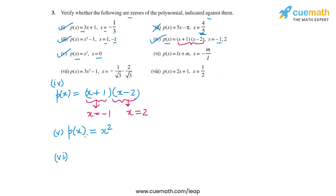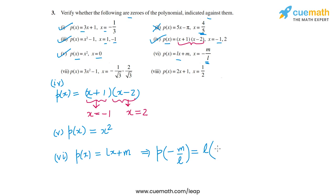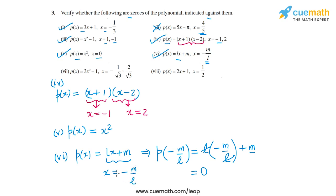In part 6, p(x) = lx + m, and we have to find whether x = -m/l is a zero. So p(-m/l) = l × (-m/l) + m. The l's cancel, leaving -m + m = 0. So p(-m/l) = 0, confirming that x = -m/l is a zero. You could also observe this simply by equating lx + m = 0, which gives x = -m/l directly.